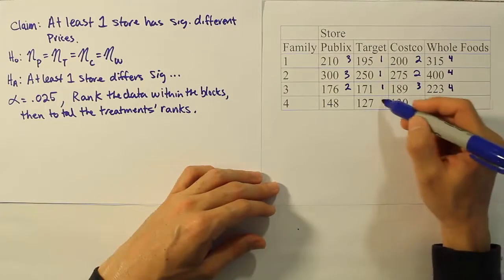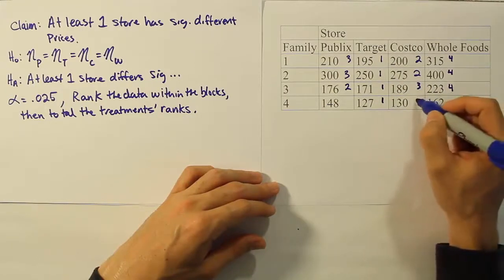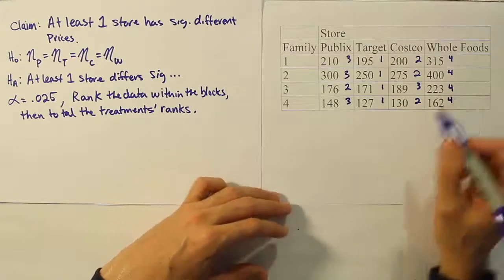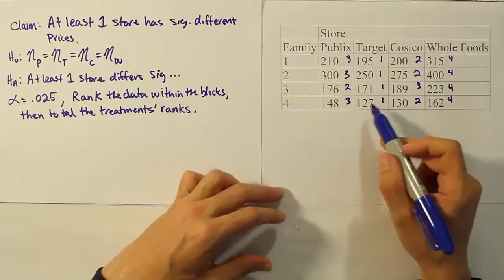And then we'll have one, two, three, four. And then again, one more time, it's one, two, three, and four. So we rank them in order, ranking them from smallest to largest.